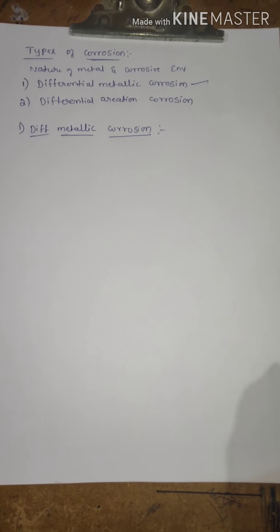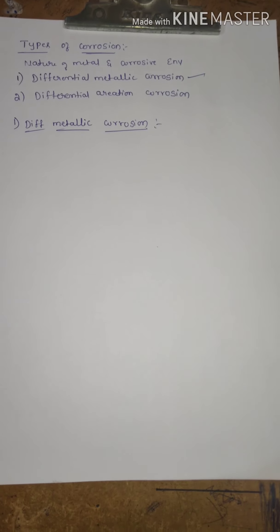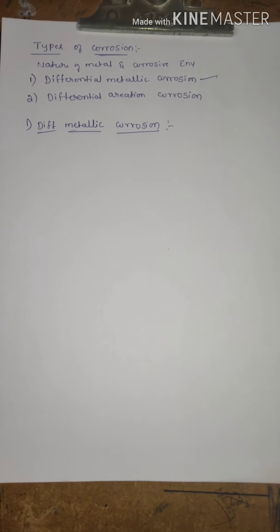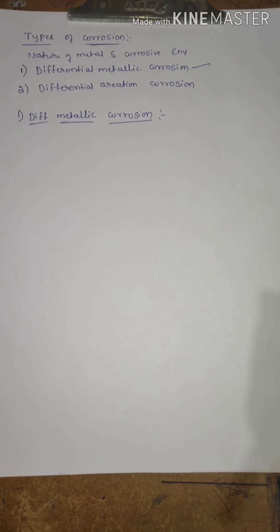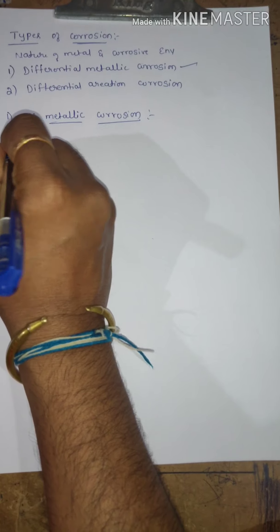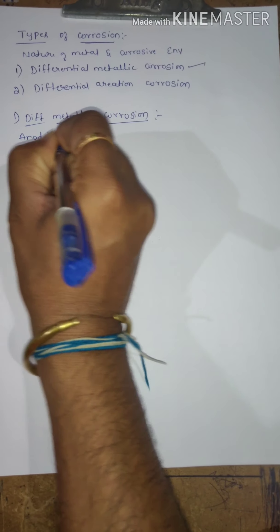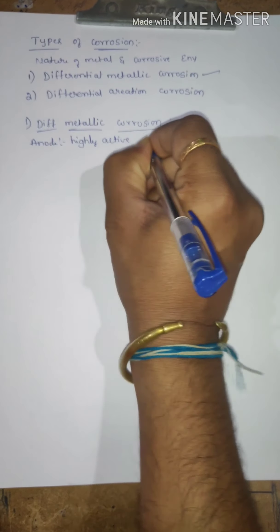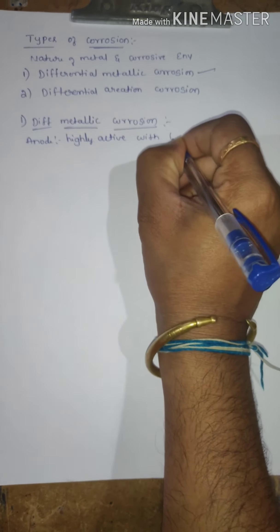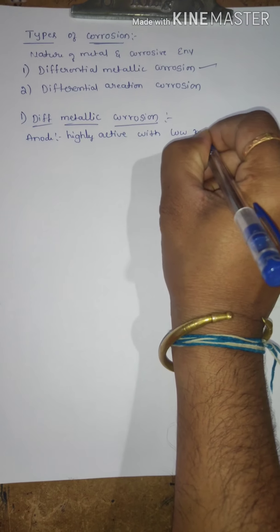Differential metallic corrosion occurs only depending upon the nature of the metal — specifically, what type of metal is used as the anode material and the cathode material. Depending upon the nature of the metal, we consider the anode and the cathode. The anode is always highly active with a low reduction potential.